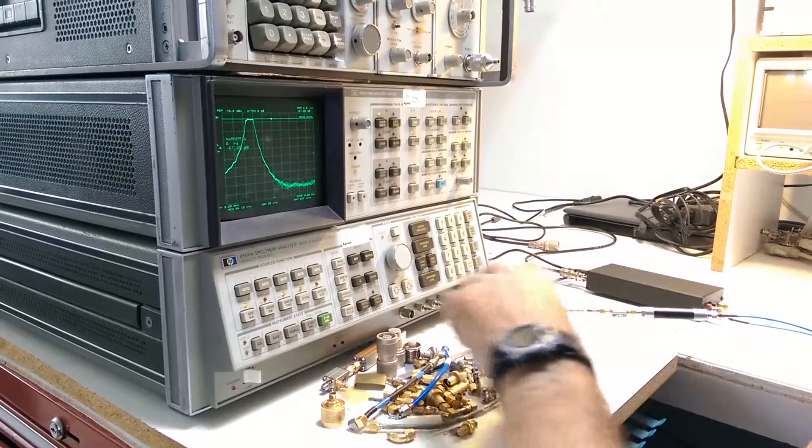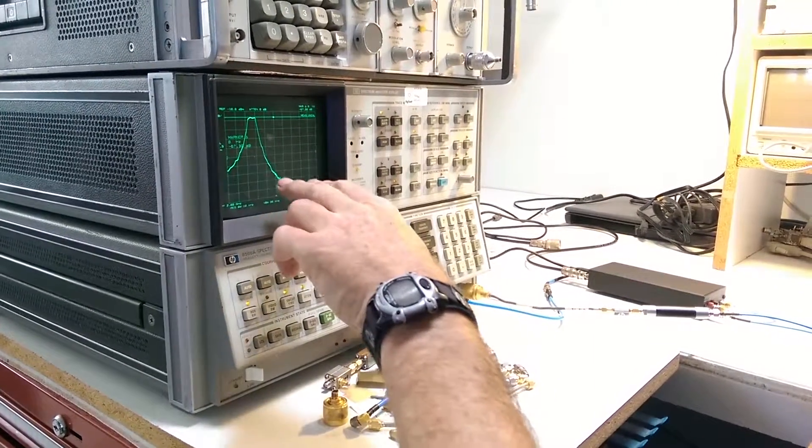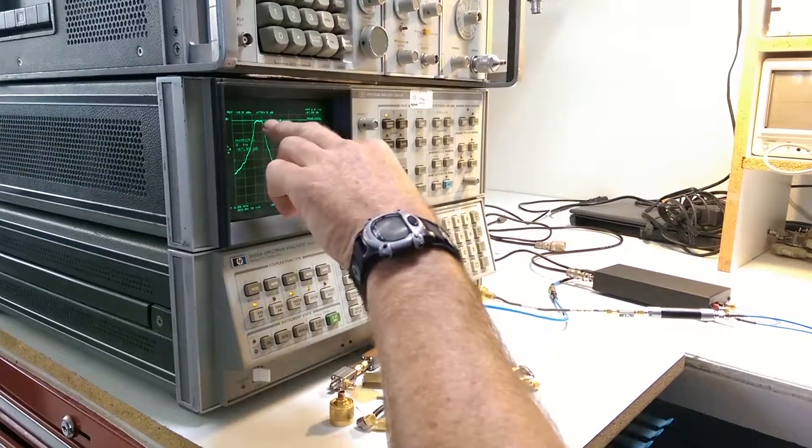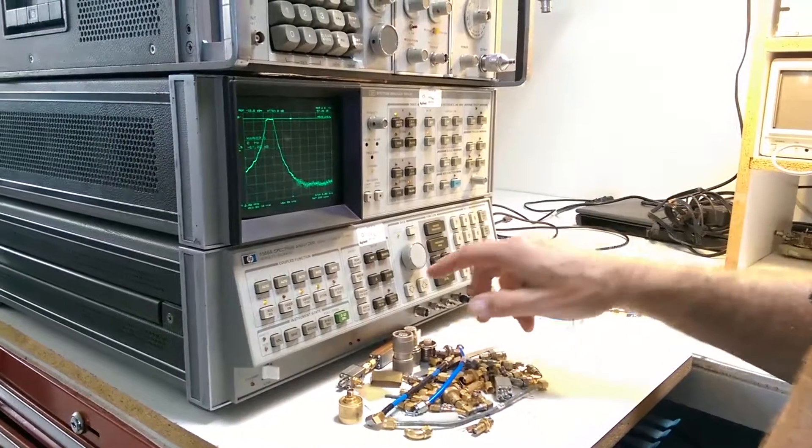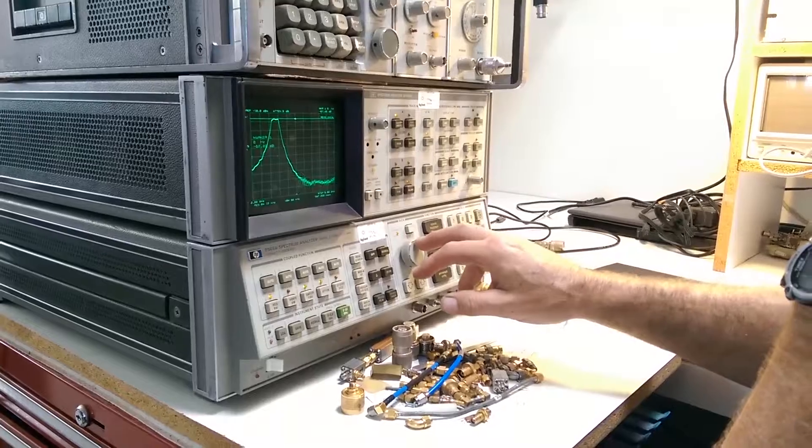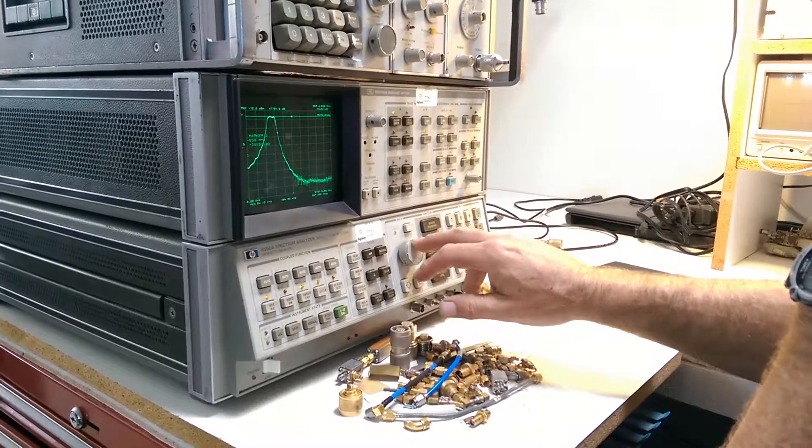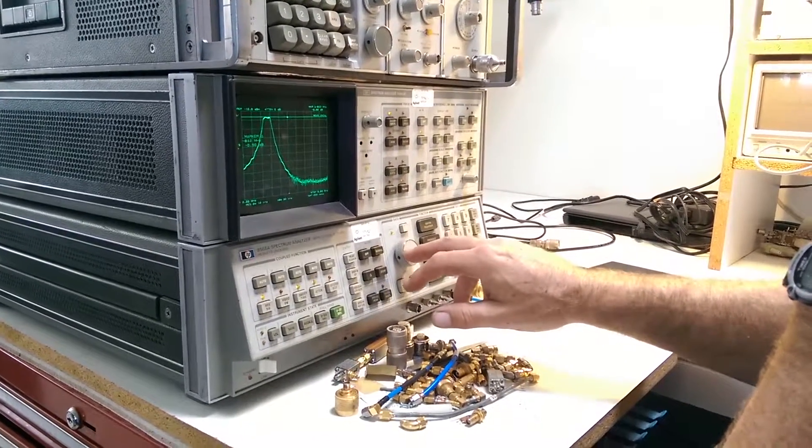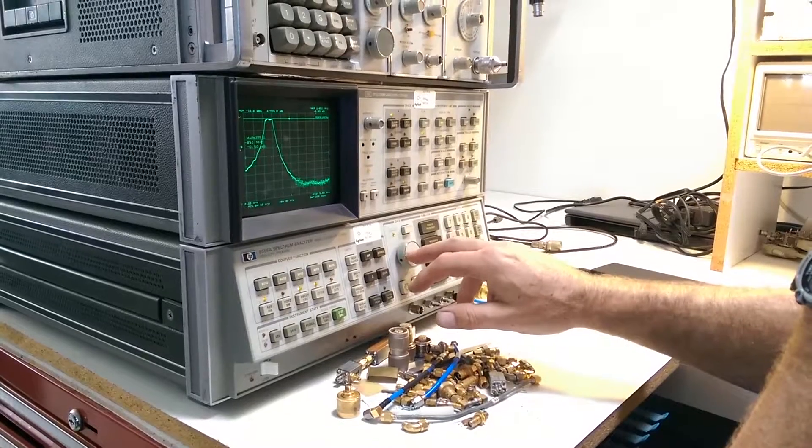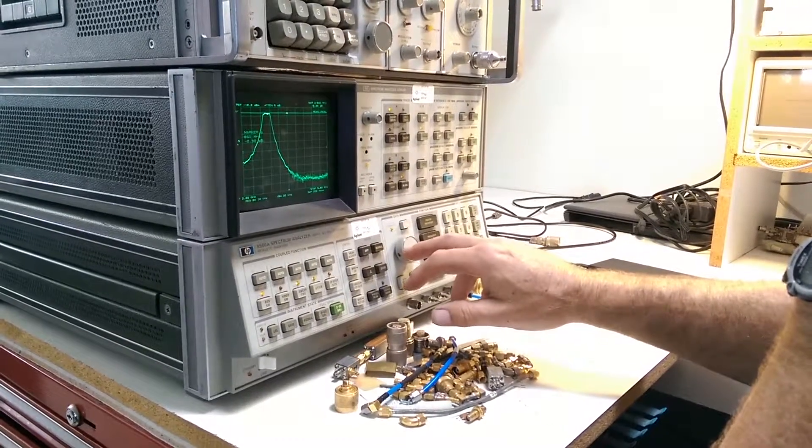If I move the marker over, it would just tell me a little bit more information maybe about the top, if I'd like. Let's see if I can do that. So here we go. So we can see that it's got very low insertion loss at the top of the filter, about a dB.